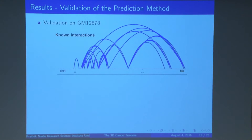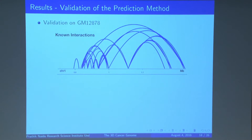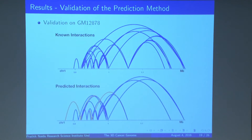We also wanted to validate our model on existing cell lines that have 3D interaction data to confirm its efficacy in loop prediction. We chose GM12878, which is well characterized in terms of its 3D interaction data. What we found was that, apart from a few false positives represented in orange, our machine learning models were able to very accurately predict a majority of the same interactions across these chromosomes, indicating and validating its ability to predict these 3D interactions.